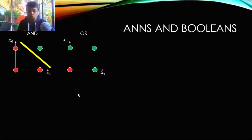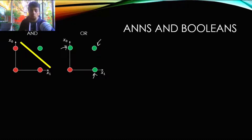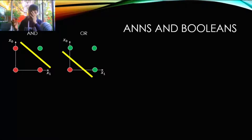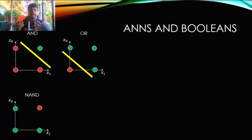For the OR gate: three positive examples — one-zero, zero-one, and one-one — and one negative example at zero-zero. Again, the examples are linearly separable. A line like the yellow one here can be easily learned by a single perceptron with no problem at all.